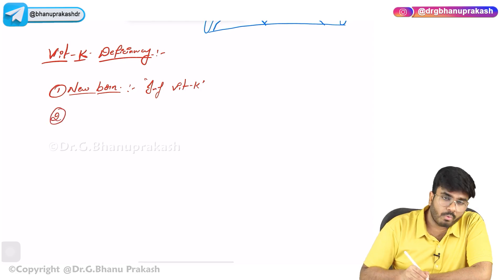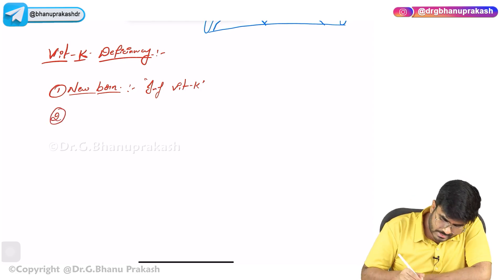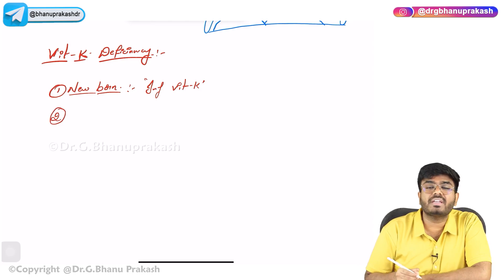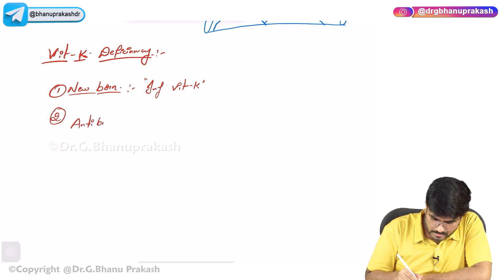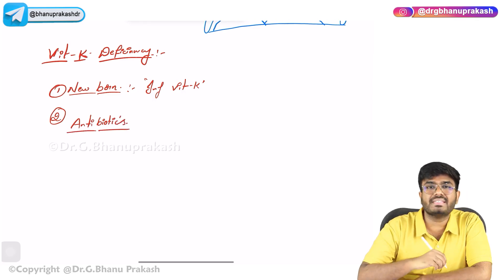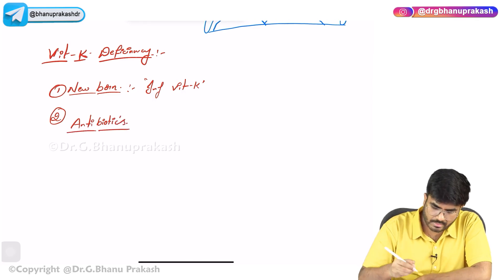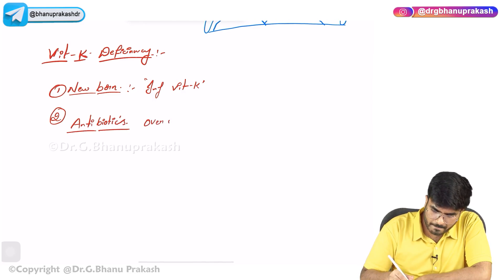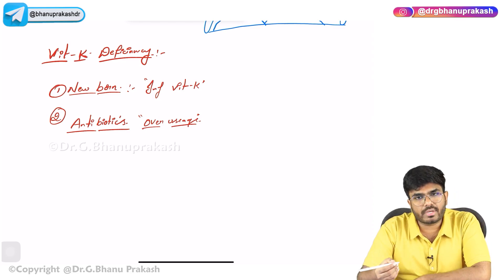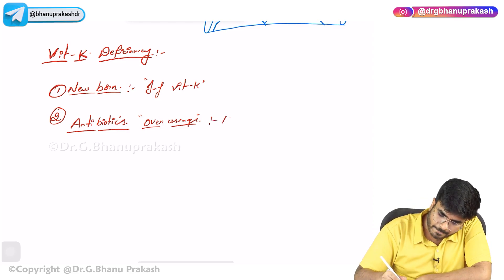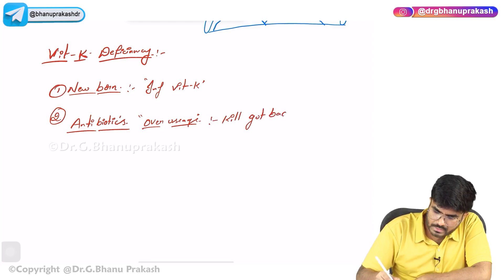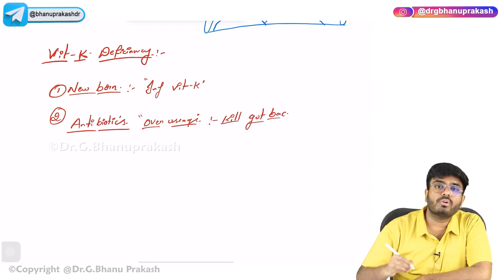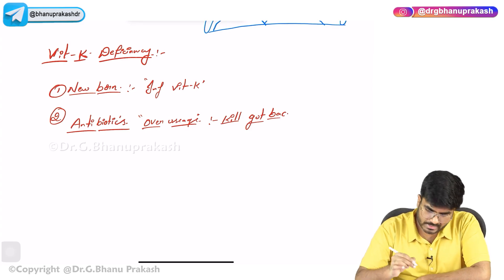Who else can get vitamin K deficiency? People using excessive or inadvertent antibiotics — too much antibiotic use kills gut bacteria, so proper vitamin K synthesis does not happen.